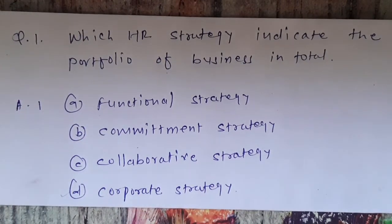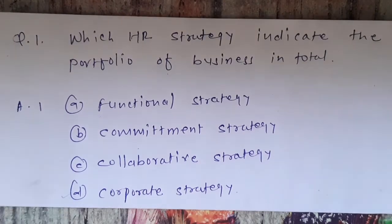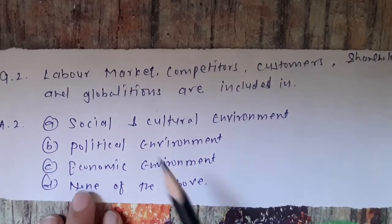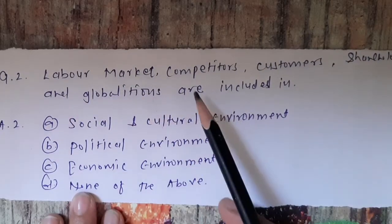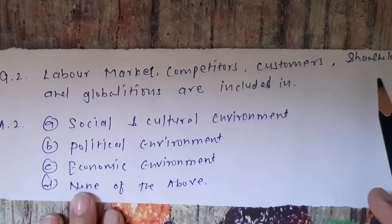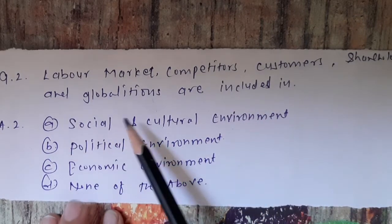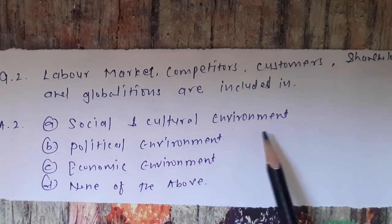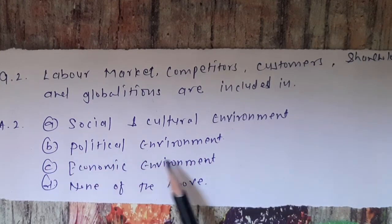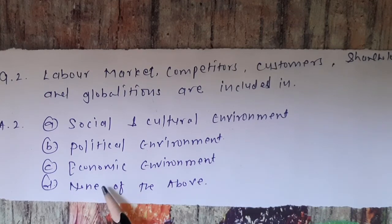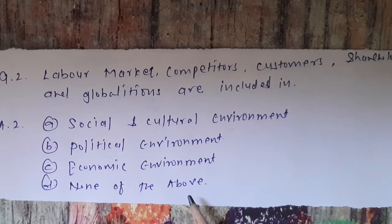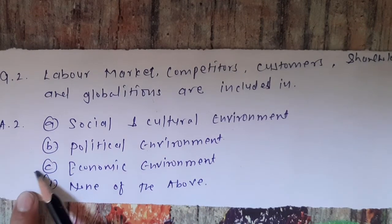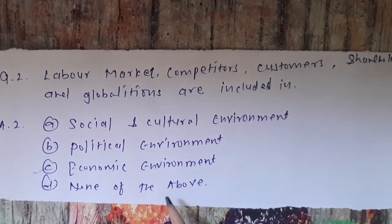Question 2: Labor market, competitors, customers, shareholders, and globalizations are included in which environment? Options are: A) Social and cultural environment, B) Political environment, C) Economical environment, D) None of the above. The correct answer is option C, Economic environment.